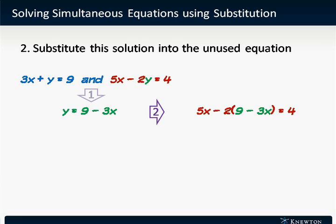The second step is to substitute this solution for y into the unused equation. So we'll substitute y equals 9 minus 3x into 5x minus 2y equals 4. This gives us 5x minus 2 times quantity 9 minus 3x equals 4.